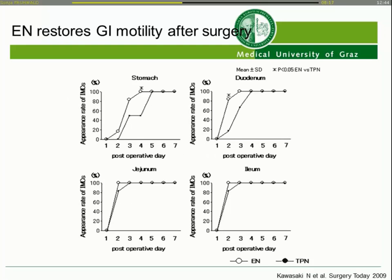This is a study in dogs that looked at different parts of the GI tract, comparing fasted animals to fed animals. Especially in the upper GI tract — stomach and duodenum — motility restores to normal much faster in the fed group. There was no significant difference in the distal part of the small bowel.